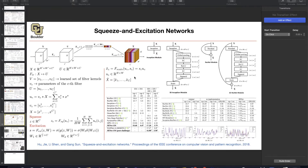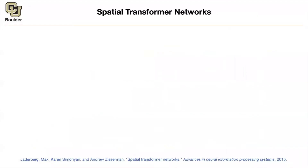Maybe 20 years from now, or even more, you're going to see these types of ideas start to shine. I'm going to start with two papers, and then I'm sure we're going to see a lot of cool stuff coming out of these. The first one is spatial transformer networks.